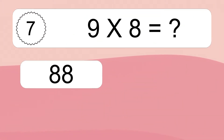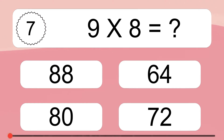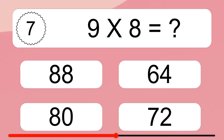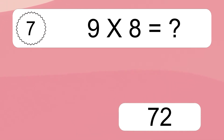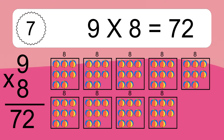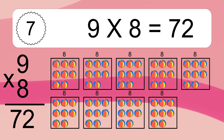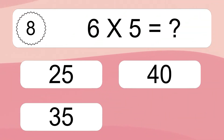9 times 8 equals what? 9 times 8 equals 72. We have 9 boxes, and each box has 8 colorful balls inside. If you count all the balls in all the boxes together, you will have 9 times 8 balls. This equals 72 balls.